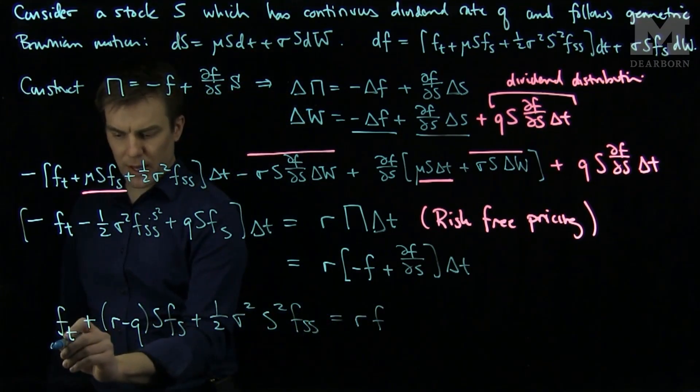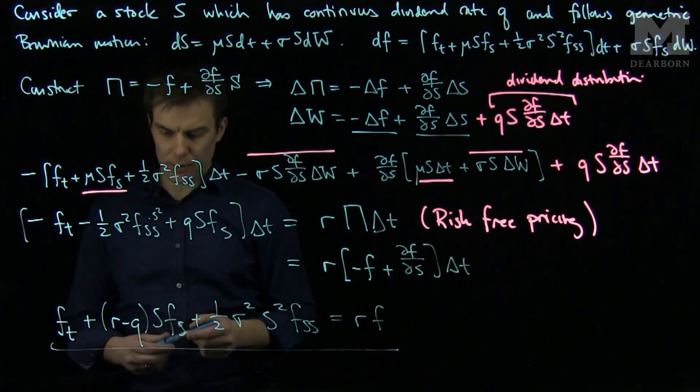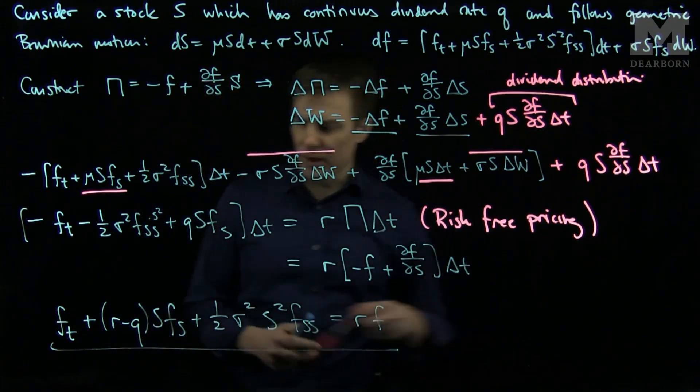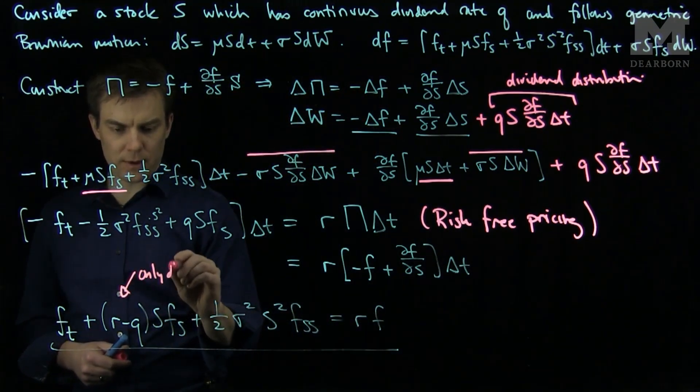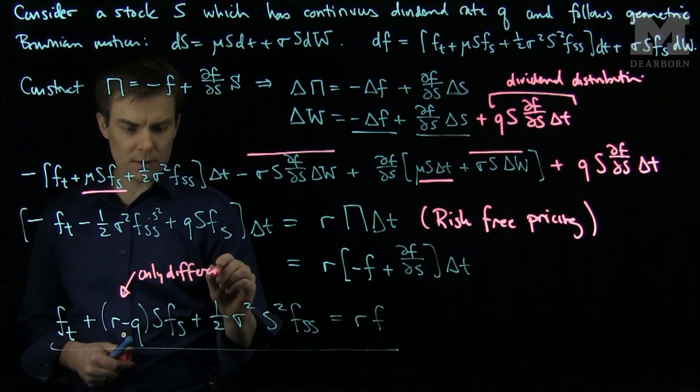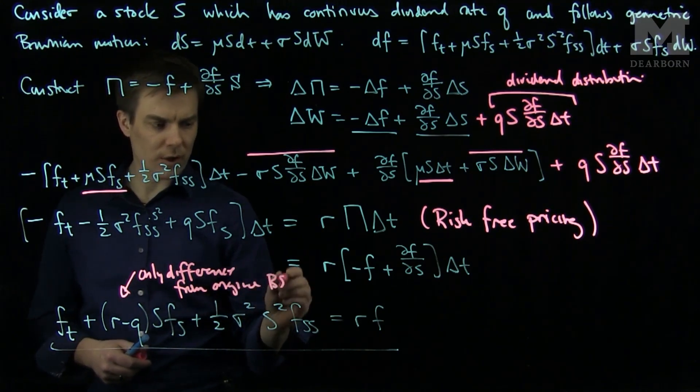So this is my Black-Scholes PDE when there is a dividend of Q and a risk free rate of r. And so we notice that this is the only term that is affected. So the only difference from the original Black-Scholes equation.